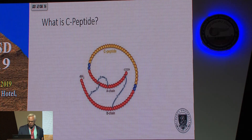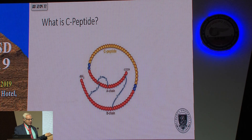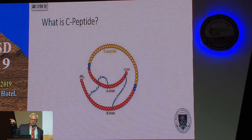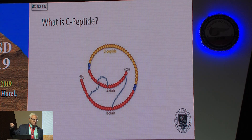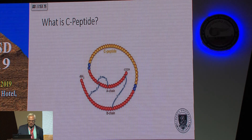For those of you who like a visual, this is a cartoon of C-peptide — you can see the chain that connects the alpha and beta chain, the 31 amino acid sequence, which kind of looks like a C. That's how they got the name.